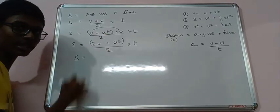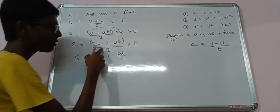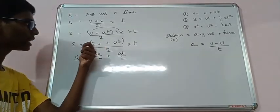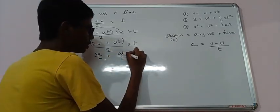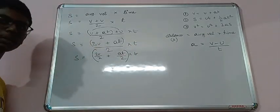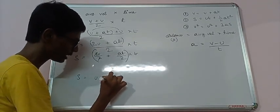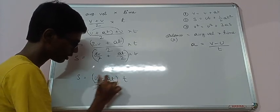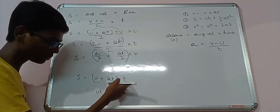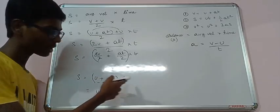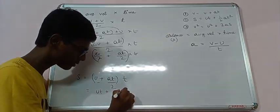Now S equals to 2U by 2 plus AT by 2. Can we give this denominator to both the numerator? Obviously we can. We can write it 2U plus AT by 2 equals to 2U by 2 plus AT by 2. We can write into T. This has to be kept in brackets. Now S equals to, this 2 and 2 gets cancelled, U plus AT into T by 2. And from here we can write UT, because T has to be multiplied with this also, with this also. So T into U is UT plus AT into T, that is AT squared by 2.